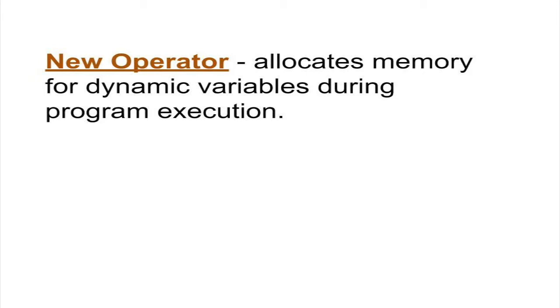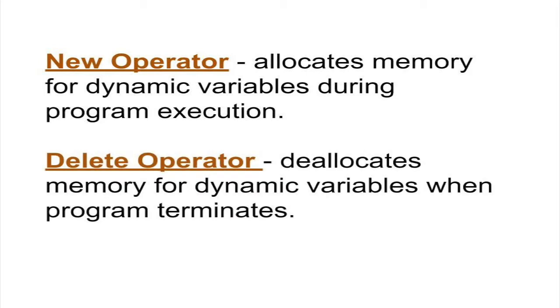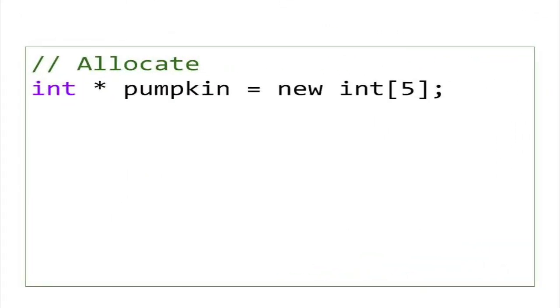Pointers are essential to instantiating objects during runtime. But since C++ doesn't provide automatic garbage collection, you will have to delete your dynamic variables programmatically. If you create an array dynamically, it's important to free up this memory once the program terminates. To avoid crashing your computer and losing precious unsaved data, always use the delete operator to free up memory used by dynamic variables. And thanks for watching.